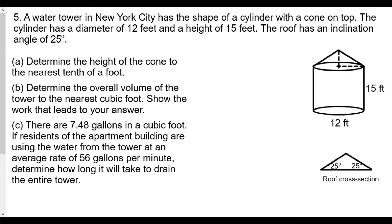The first question is: determine the height of the cone to the nearest tenth of a foot. We're going to take a look at this cone, and this is going to be 25 degrees. If this is 12, and we draw an altitude downwards, because of the isosceles triangle for the cross-section...